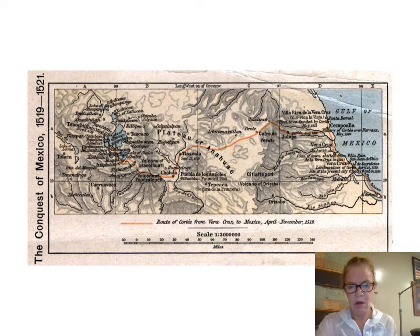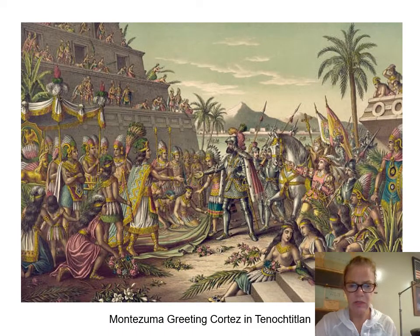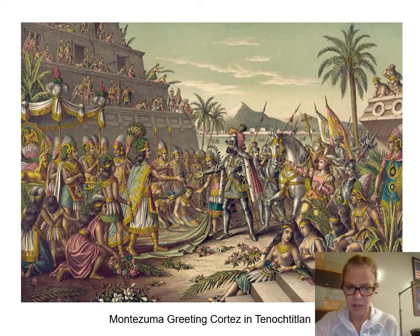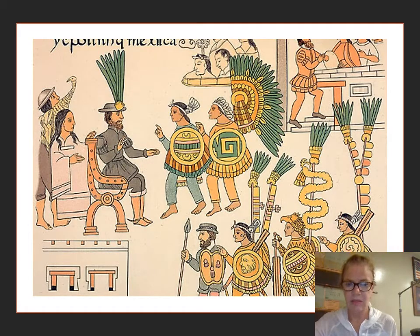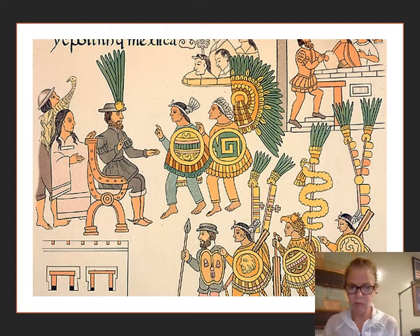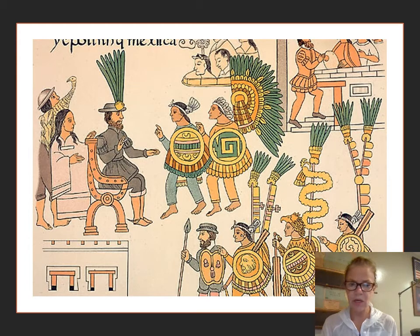The red line shows where Hernán Cortés came in from the Gulf and proceeded over to Tenochtitlan. Here is an image depicting Montezuma, king of the Aztecs, greeting and meeting Cortés — look at the differences in these two cultures clashing. There's also an Aztec depiction showing Cortés seated in a chair with armor. Behind them is a woman known as Malinche — a Mayan woman from the Yucatan who spoke several languages and served as a translator for Cortés.